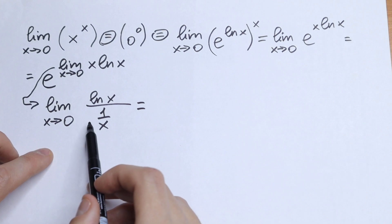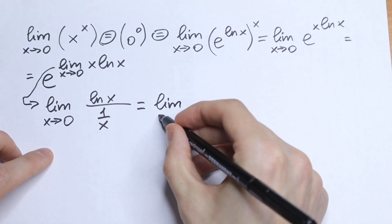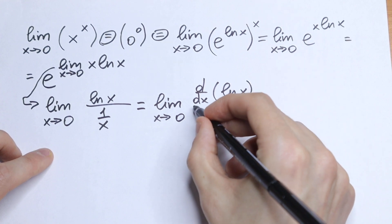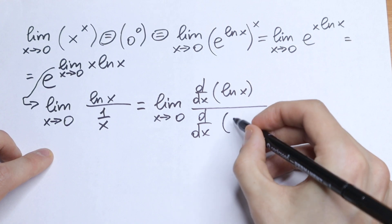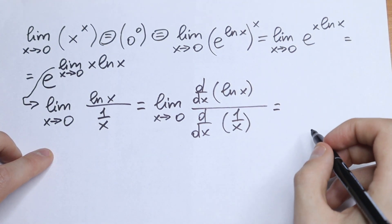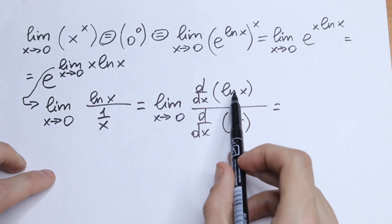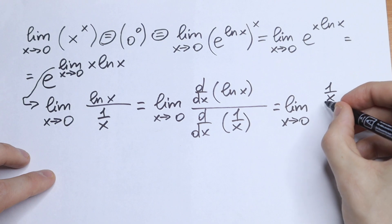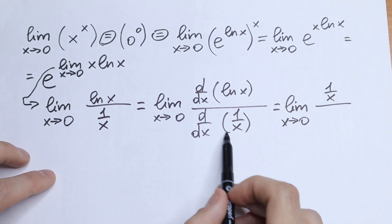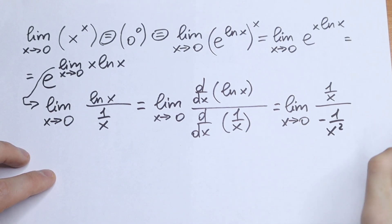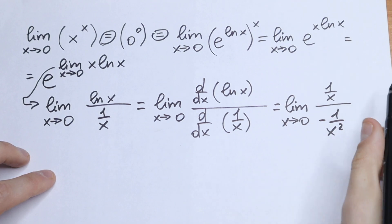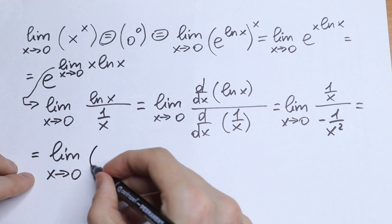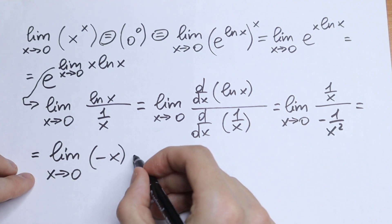So why do we write it this way? Because we can use L'Hôpital's rule. So we write this as the limit as x approaches 0 of the derivative of the numerator natural log x, all over the derivative of the denominator 1 over x. The derivative of natural log x is 1 over x, so we have the limit as x approaches 0 of 1 over x in the numerator, and in the denominator the classic rule gives us minus 1 over x squared. Canceling x squared and x, as a result this limit equals the limit as x approaches 0 of minus x. Plugging in 0, our answer is 0.